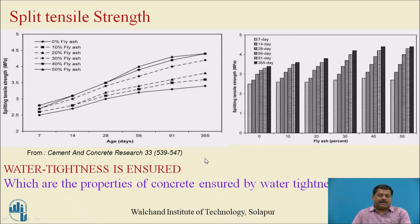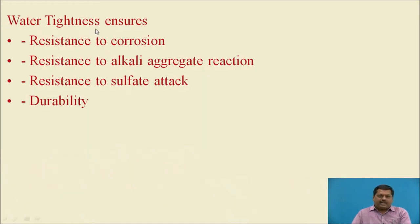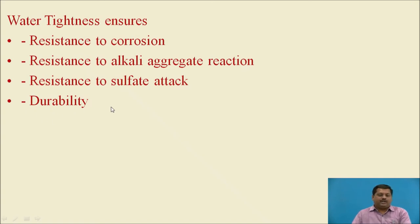Water tightness is also ensured by using fly ash in concrete, because fly ash is a very fine powder that fills all pores. Water tightness ensures resistance to corrosion, resistance to alkali-aggregate reaction, and resistance to sulfate attack — all of which improve the durability of concrete. These three parameters automatically enhance the overall durability.